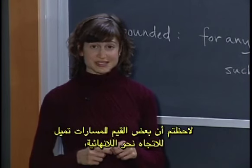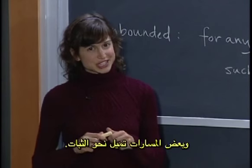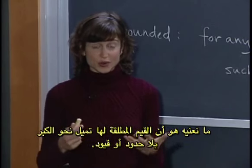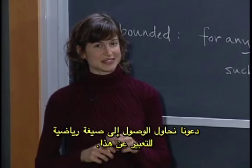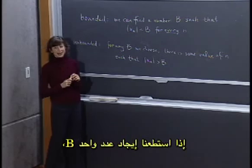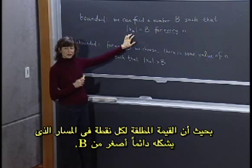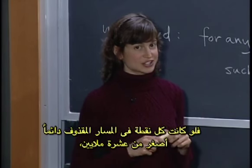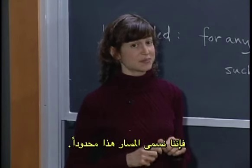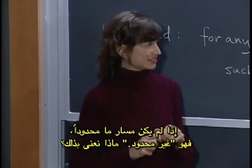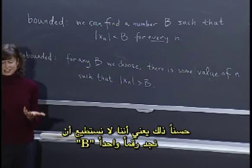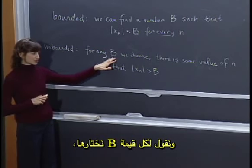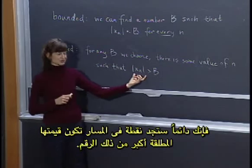In the examples you just explored, you saw that some trajectories tended to head off to infinity, either positive or negative, and some trajectories tended to stay finite. We'll call a trajectory bounded if we can find a single number b such that the absolute value of every point in that trajectory is always less than b. Even if b is a really big number like 10 million, if every point in our trajectory is always less than 10 million, we call that a bounded trajectory. If a trajectory isn't bounded, then it's unbounded.